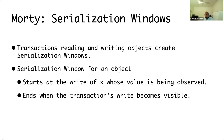Morty introduces the concept of a serialization window. Transactions reading and writing objects create a serialization window. In this paper we talk about serialization windows of data objects. For example, imagine a transaction operating on data items A, B, and C. The serialization window pertains to a particular data item of a transaction. It starts at the read of X — the data item being observed — and ends when the transaction's write becomes visible. So, the serialization window starts when the value of X is observed and ends when it is finally written.